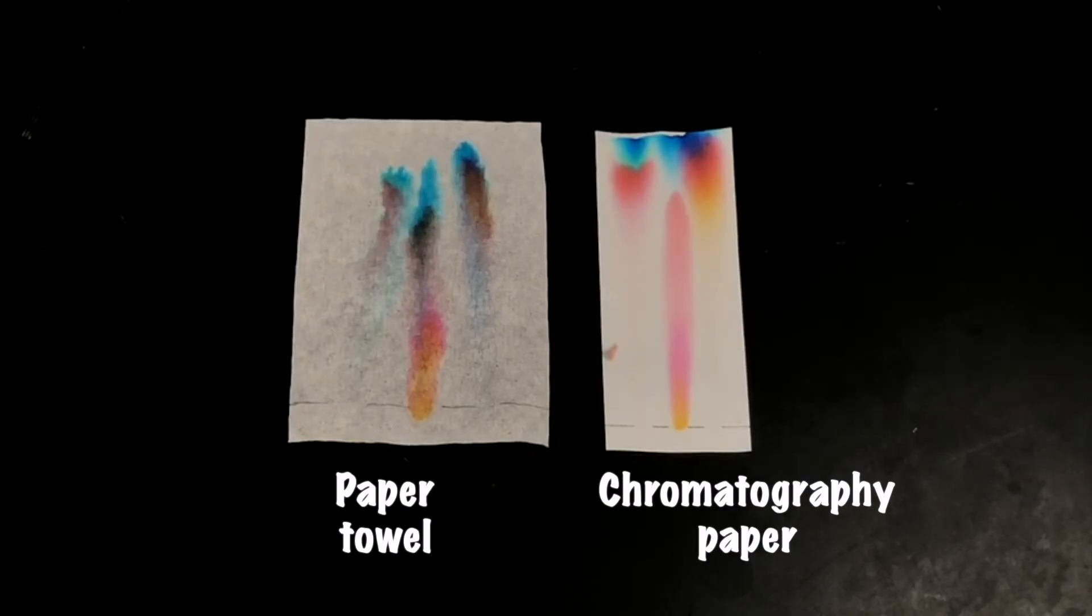The chromatography paper is a special paper that's designed to be able to separate different chemicals from one another. So we have a more consistent structure on the paper, which gives us a little bit more definition between each of the spots.